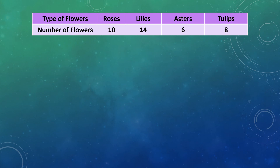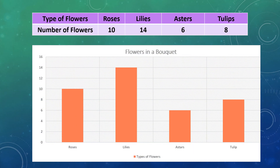Here, the data of the number of different types of flowers in a bouquet is given. We have to draw a bar graph using this data. While drawing the bar graph, we should mention the title on the top of the graph — that is, 'Flowers in a Bouquet'.